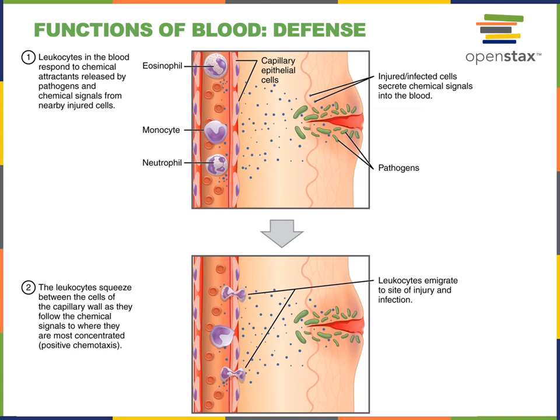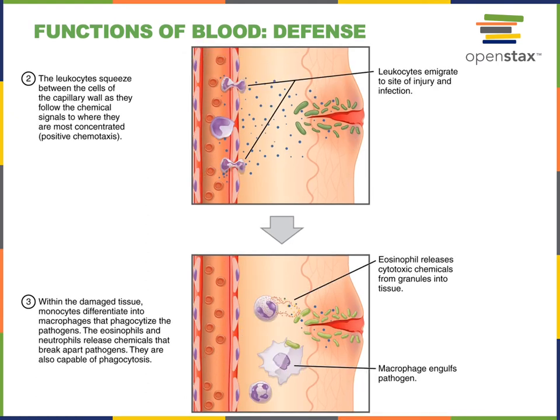Leukocytes can migrate into a wound to help defend against bacteria or other pathogens entering the body from damaged skin. When leukocytes find an infection, they can defend against it in a variety of ways. For example, macrophages can perform phagocytosis — as seen in the illustration here — engulfing a bacterial cell in order to degrade it. Another example shown here is an eosinophil releasing cytotoxic granules, which help to destroy bacteria and defend against infection.